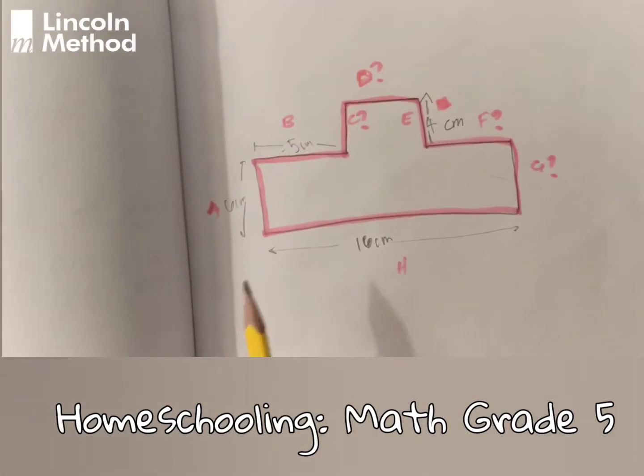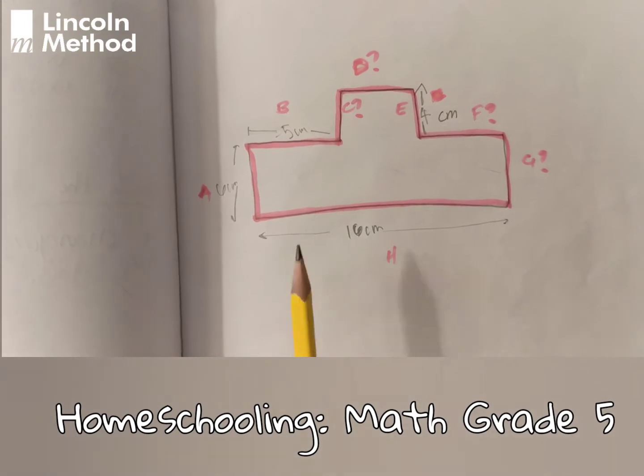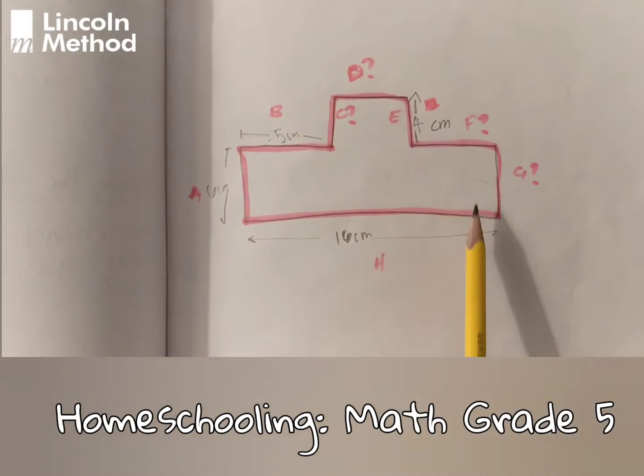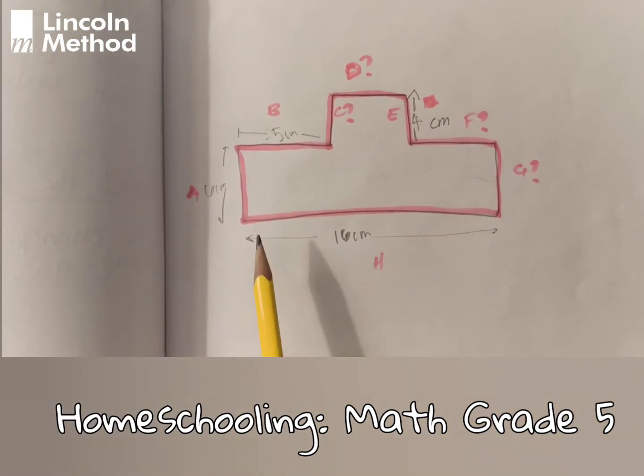We've got our shape over here and we need to find the perimeter. A perimeter is the distance around the shape, and this shape has 8 sides.